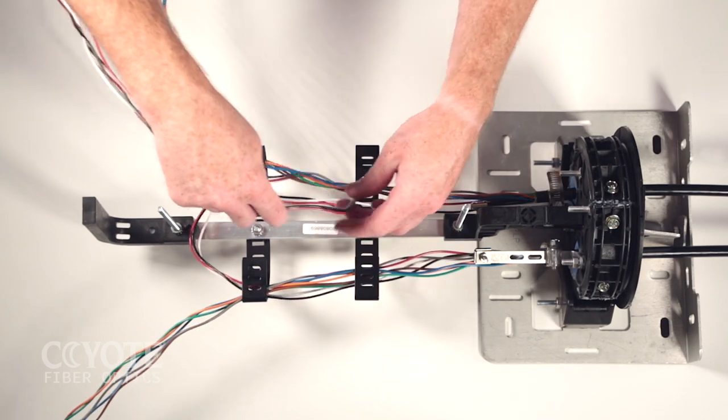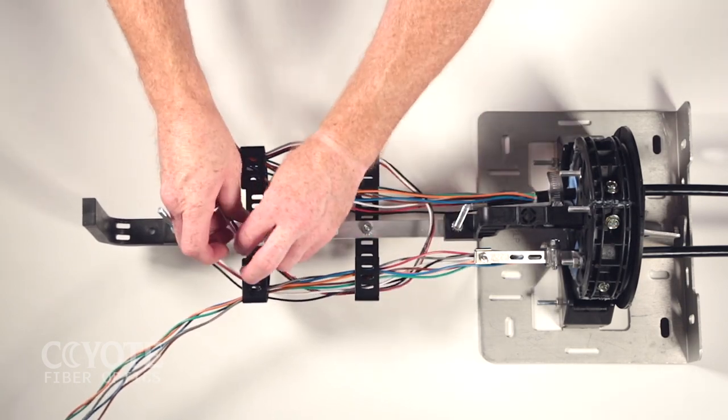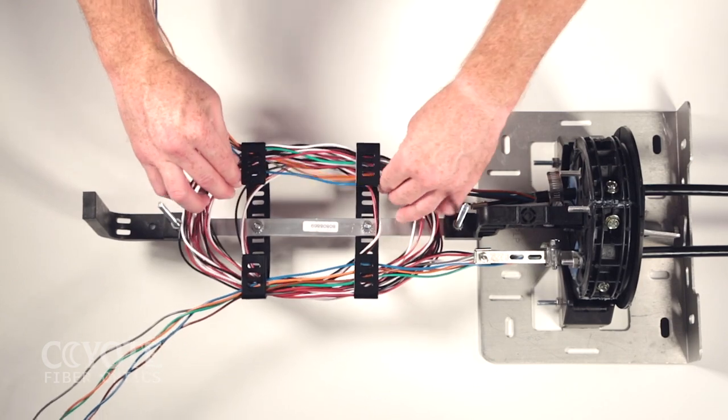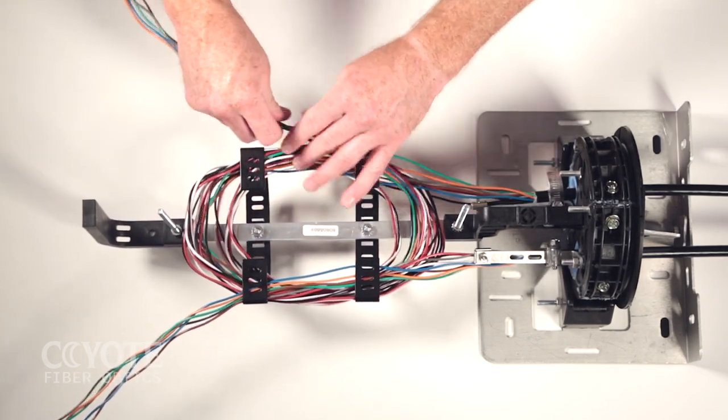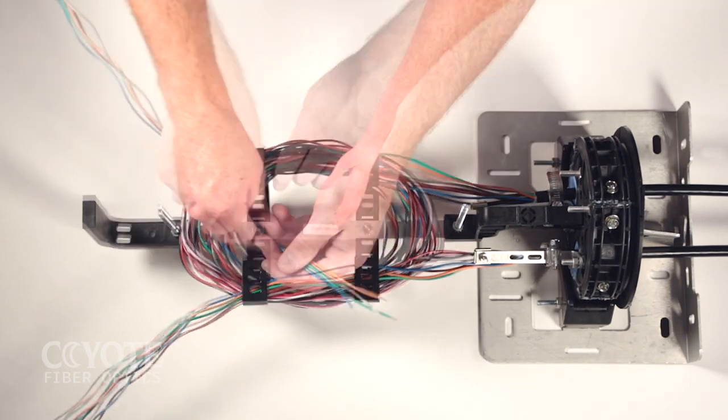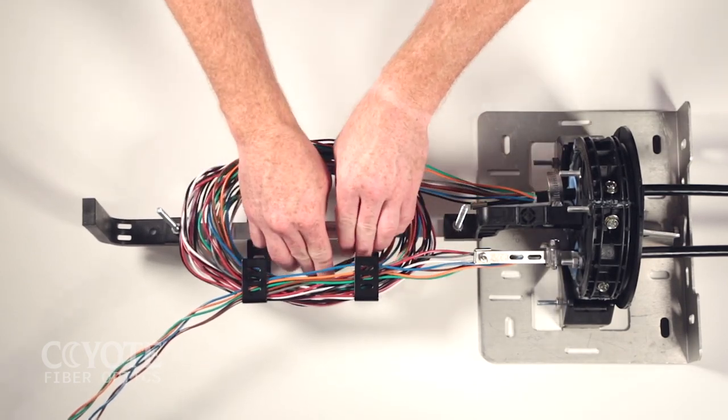Determine the buffer tubes that will be opened and place them off to the side. For unused buffer tubes that will not be routed to the splice tray, store them in the slack storage area.